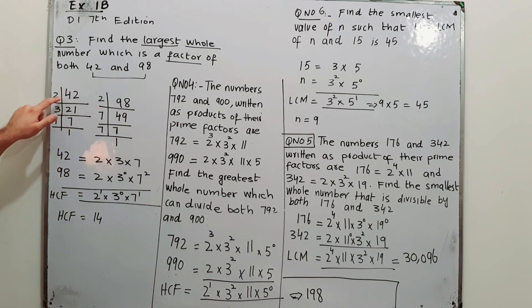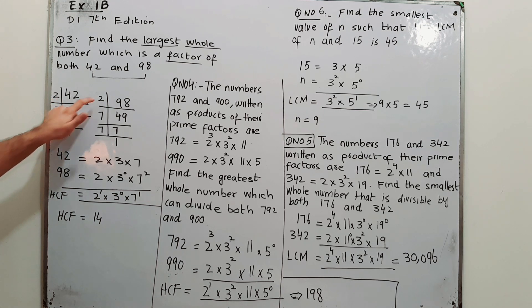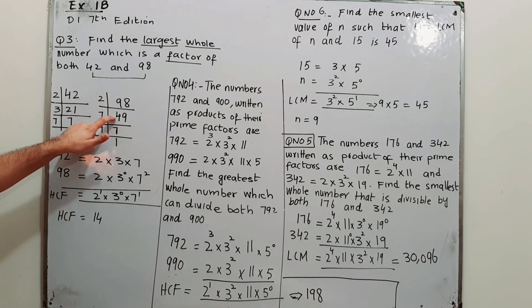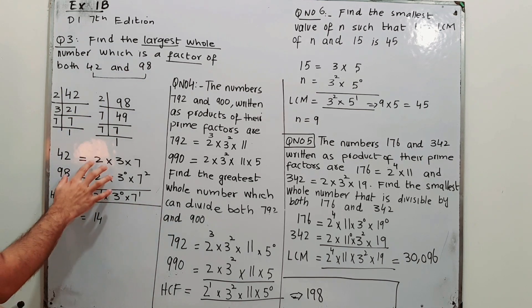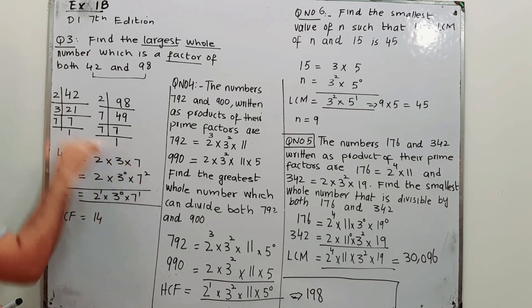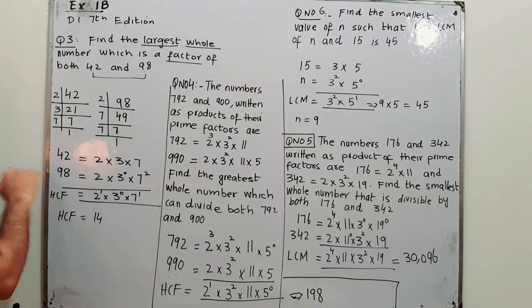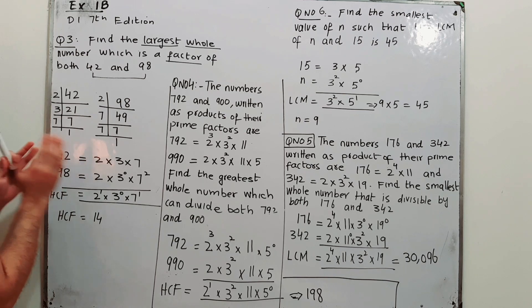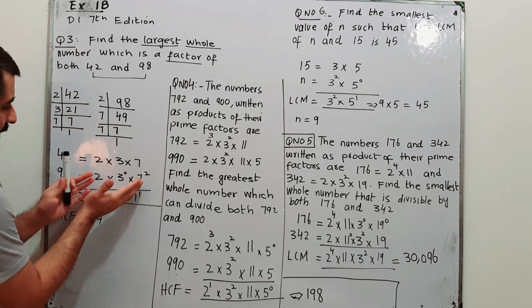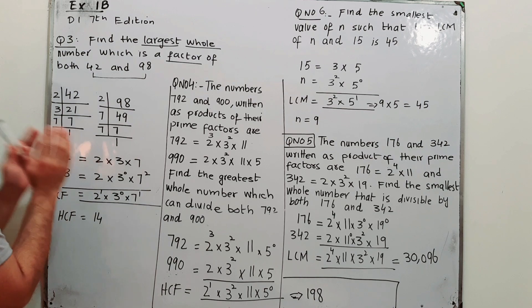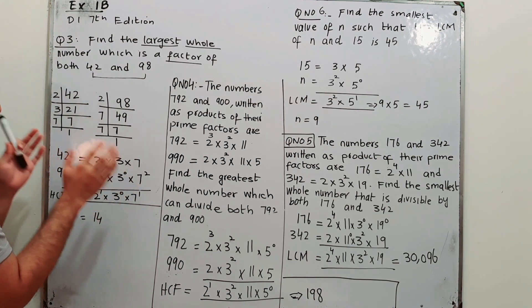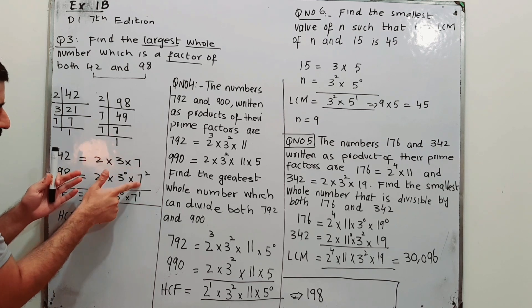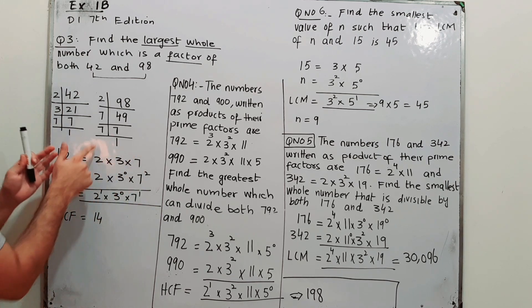So factorize 42 and 98 — find their prime factors. 42 = 2 × 21, 3 × 7 × 1 × 7. 98 = 2 × 49, 7 × 7. So you can write 42 as 2 × 3 × 7, and you can express 98 as a product of its prime factors in index notation as 2 × 7².